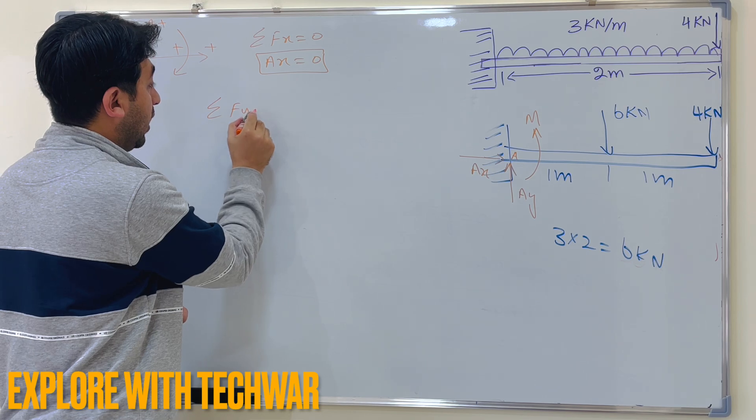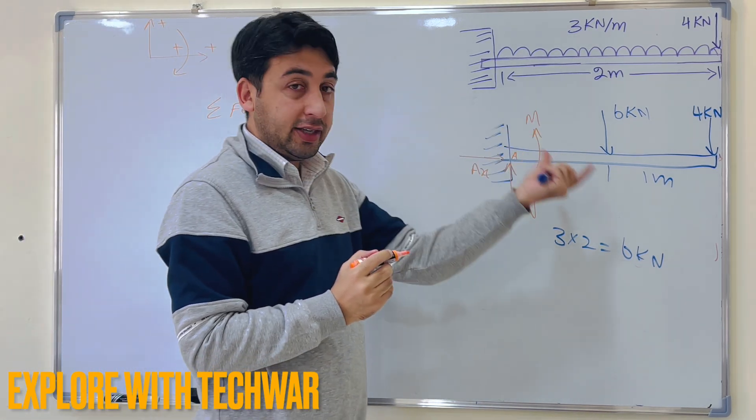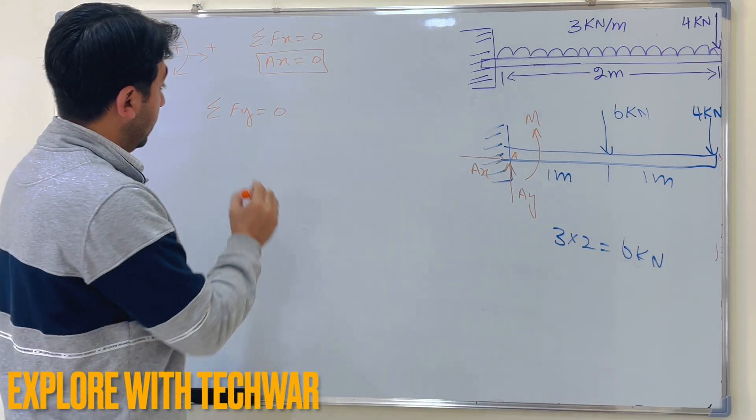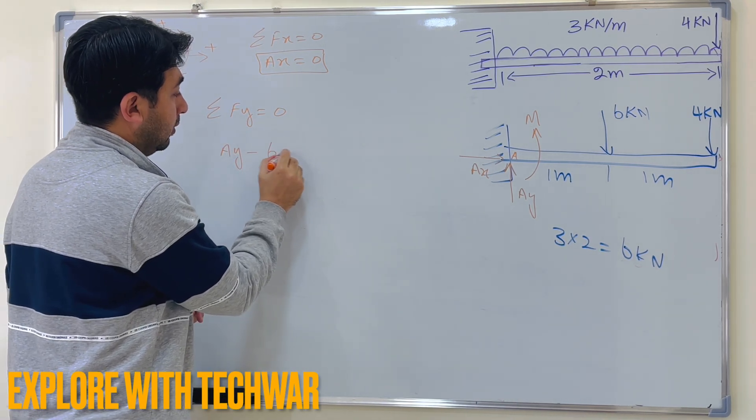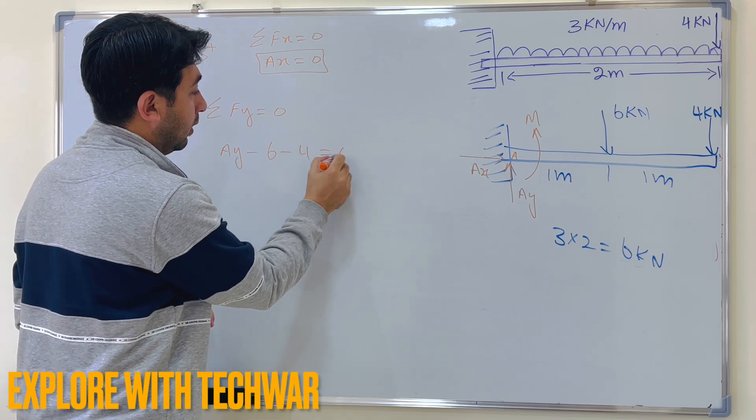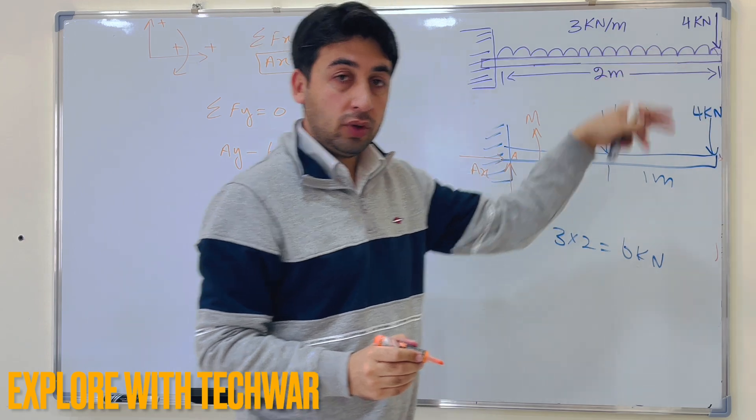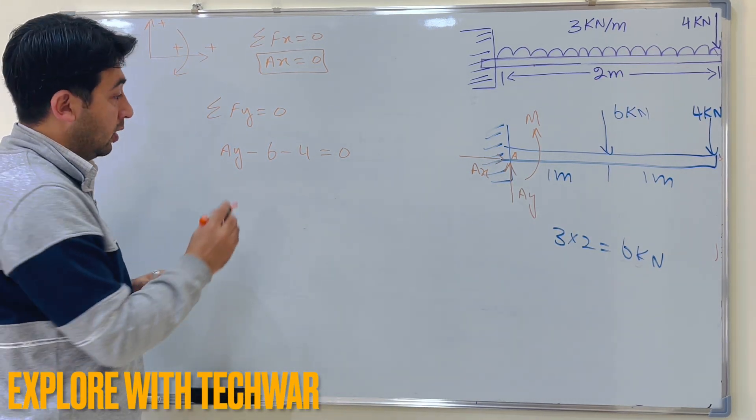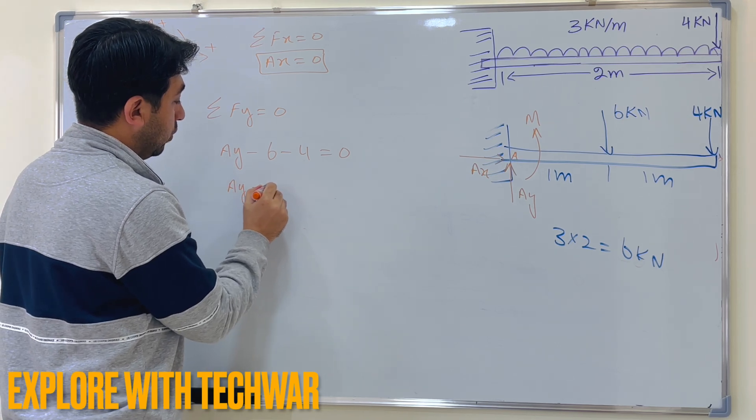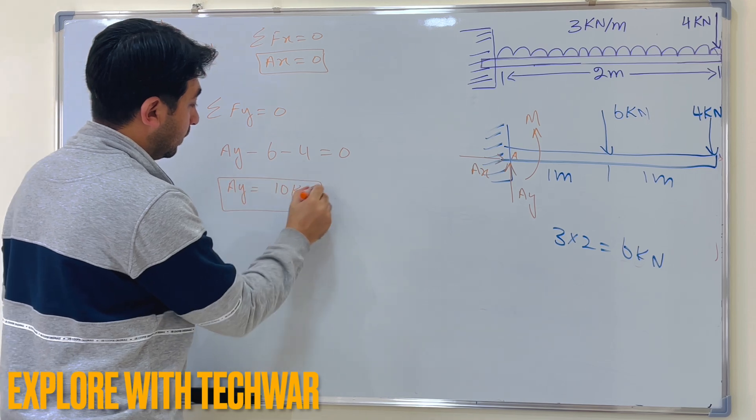So I will write another condition of equilibrium, sum of forces in the y direction equal to 0. Now what are the forces acting in the y direction: AY minus 6 minus 4 equal to 0. 6 kN is here, 4 kN is here, both are acting downward, so that is why I am putting negative sign. So AY will be equal to 10 kN.